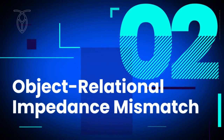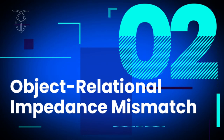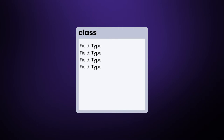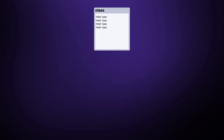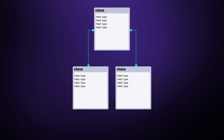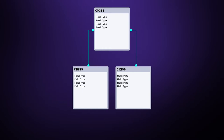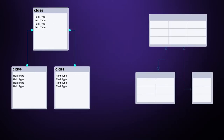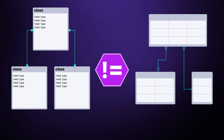To really understand where SQL is an effective tool, we first need to understand the language and what it can do. Application programming languages often work with hierarchies of objects — this is the basis of object-oriented programming. Meanwhile, SQL databases usually work with data in the form of tables and relationships between those tables. They are known as relational databases.